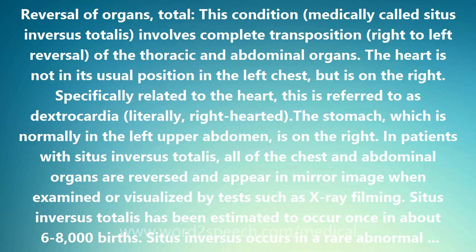In patients with situs inversus totalis, all of the chest and abdominal organs are reversed and appear in mirror image when examined or visualized by tests such as X-ray filming. Situs inversus totalis has been estimated to occur once in about 6,000 to 8,000 births. Situs inversus occurs in a rare abnormal condition that is present at birth — congenital — called Kartagener syndrome.